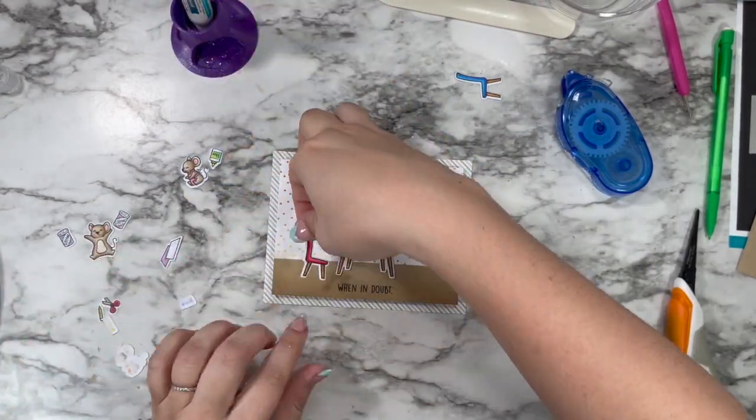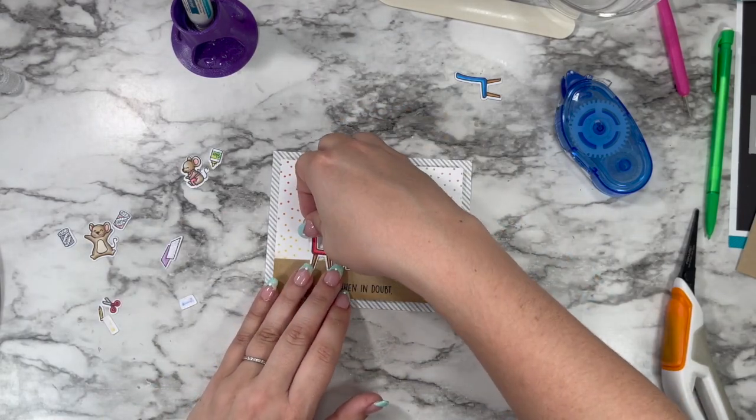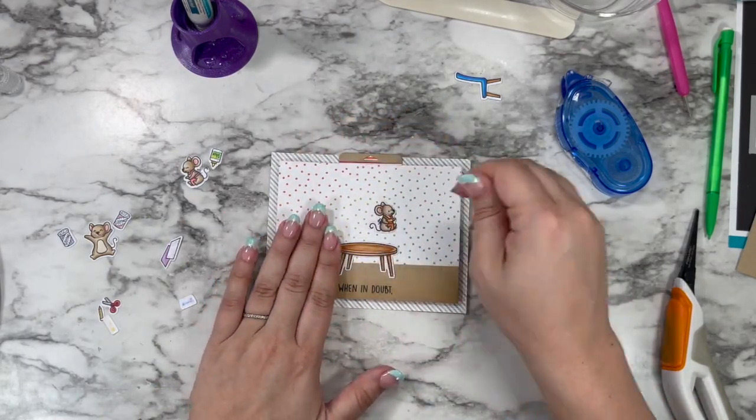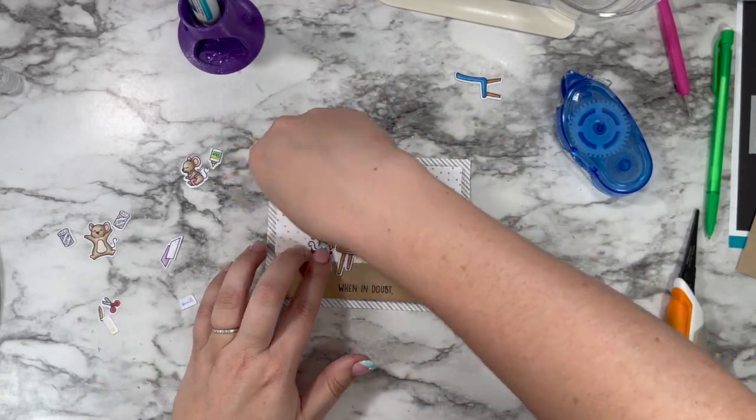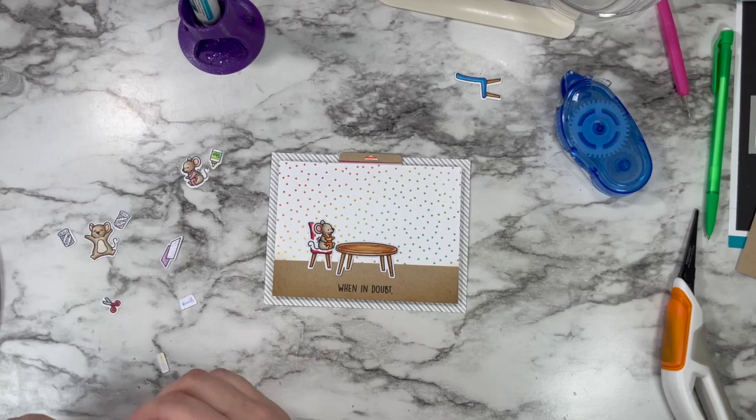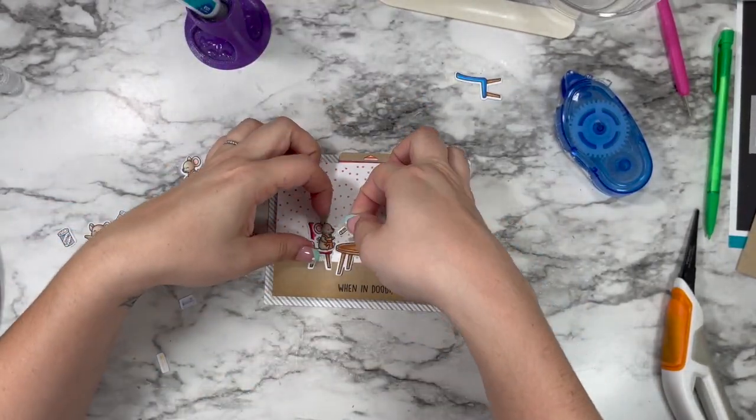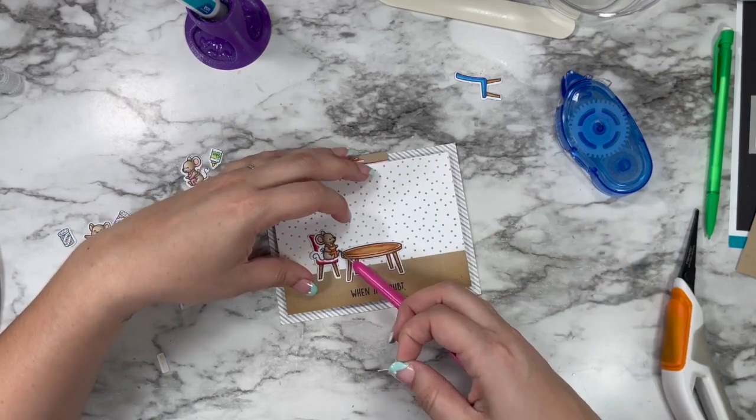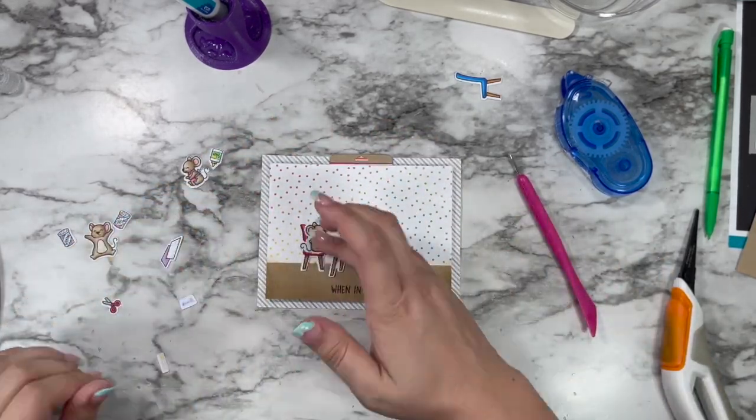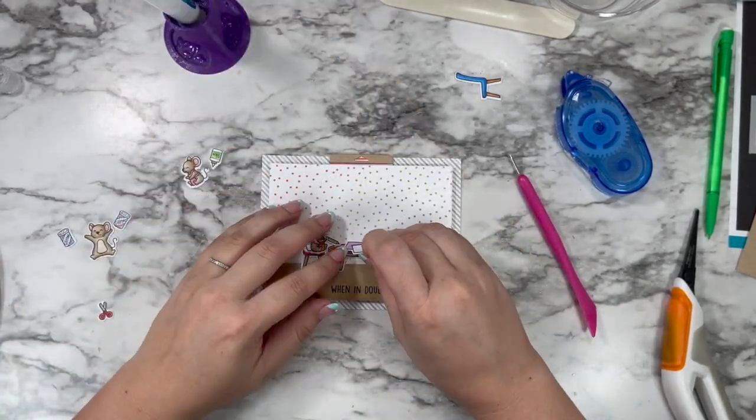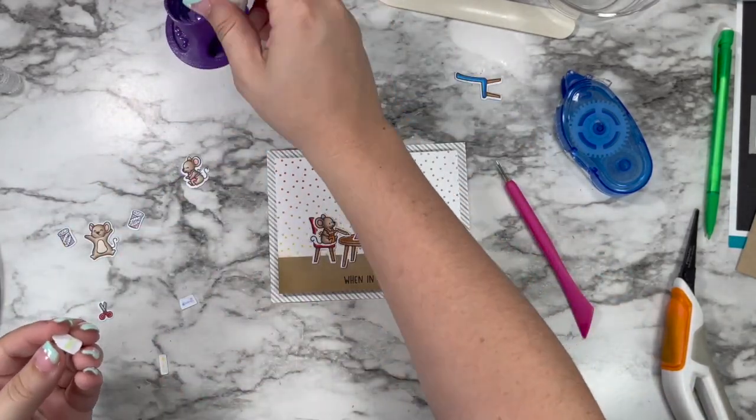I'm adding some Tombow permanent mono adhesive to my panel - you just want to make sure that you're avoiding the area where the actual mechanism is, where that paper needs to move and that pull tab needs to slide up. So now this is when it gets really fun for me - the scene building with all my little pieces. I'm putting my table front and center and then adding in my chairs and my little mice and starting to add in all their little accessories.